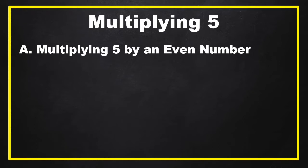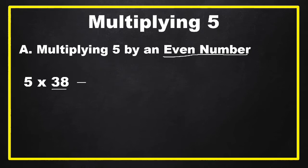The first part is multiplying five by an even number. An even number is a number divisible by two. For example, five times 38 — 38 is an even number. All we have to do is get one half of 38, which is equal to 19.